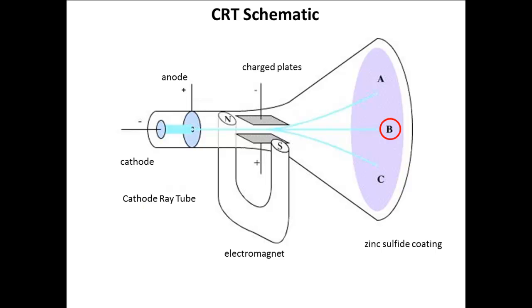If only the charged plates are turned on, the spot moves to C. If only the magnet is turned on, it appears at A.